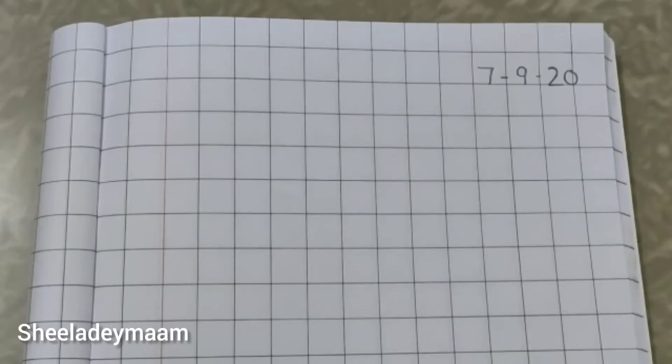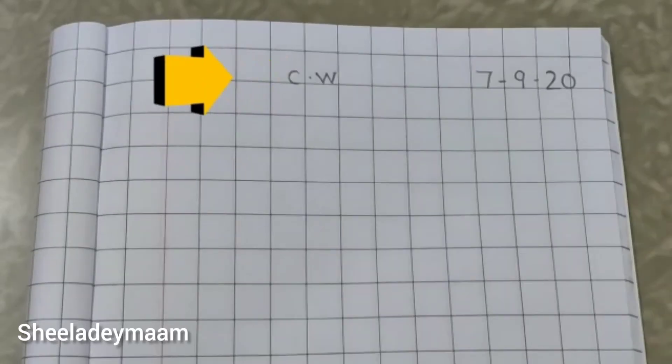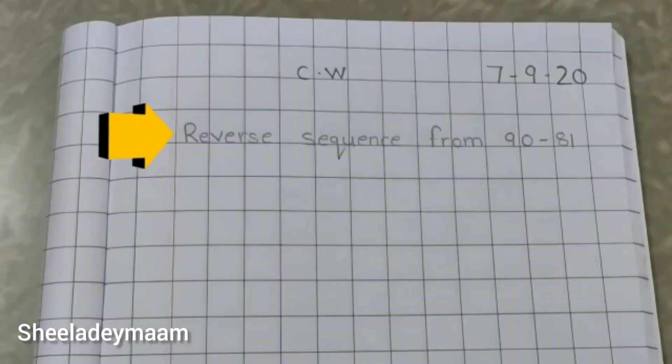At first, you have to write today's date on the top. And after that, write CW classwork and then write the heading: Reverse sequence from 90 to 81.